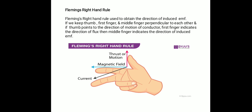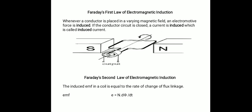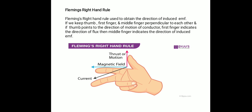Fleming's right hand rule is used to obtain the direction of induced EMF. You can see the right hand shown in the figure, where the first three fingers — thumb, first finger, and middle finger — are kept perpendicular to each other. The thumb indicates the direction of motion of the conductor, the first finger indicates the direction of the magnetic field or magnetic flux lines, and the middle finger indicates the direction of the current. This is called Fleming's right hand rule.